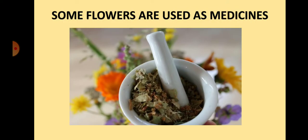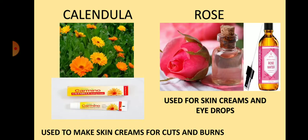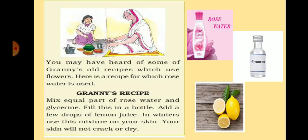Some flowers are used as medicines. Look here the picture of the calendula flower. Calendula flowers are used to make skin creams for cuts and burns. Rose is also used to make skin creams and eye drops. You might have heard about some old grandmothers' recipes which use flowers. Here is one recipe using rose water: mix equal parts of rose water and glycerin, fill this in a bottle, and add a few drops of lemon juice. In winters, if you use this mixture on your skin, your skin will not crack or dry.